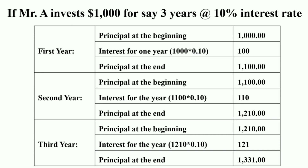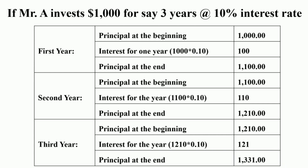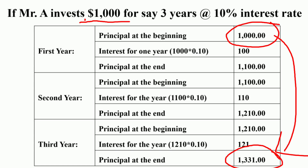Similarly, the principal amount at the beginning of the third year will be ₹1210, along with the 10% rate of interest. So 10% of ₹1210 is ₹121, and the principal amount at the end of the third year will be ₹1210 + ₹121 = ₹1331. This process of calculation is known as compounding and the sum arrived at after compounding the initial amount is known as the present value. So in our example, the future value of ₹1000 is ₹1331 after 3 years at 10% interest rate compounding annually.